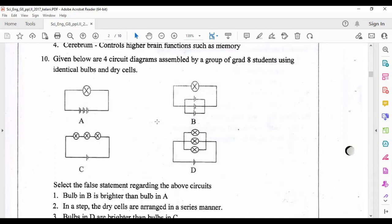Question number 10: given below are four circuit diagrams assembled by a group of grade 8 students using identical bulbs and dry cells. Select false statement regarding the above circuits. Bulb in B is brighter than bulb in A - it's wrong. In B there are three cells connected in parallel method, and if there are many dry cells connected in parallel, the current given from all these cells equals the current given from one cell. In A there are three cells giving current, so in the first diagram A the brightness is higher than B. So first answer is the false statement.